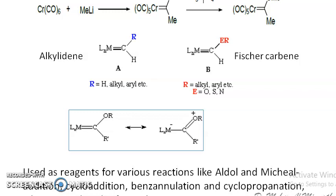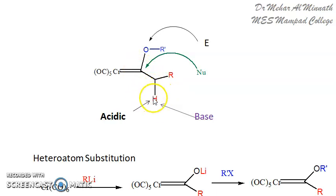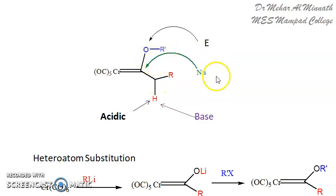Let us see how the reaction happens. Here you can see the structure of the chromium-carbene complex. The hydrogen attached to the alkyl group, which is in turn attached to the double-bonded carbon, is acidic in nature and a base can easily abstract that proton — proton abstraction is possible, giving a carbonyl. In another type of reaction, a nucleophile can easily attack this carbon on the chromium-carbene, as this carbon is electrophilic in nature, similar to a carbonyl carbon (C=O). Instead of C=O, you have C=CR, so a nucleophile can come and attack on this carbon.